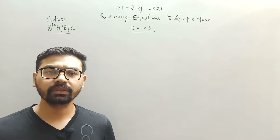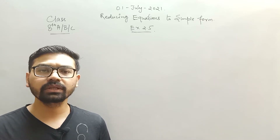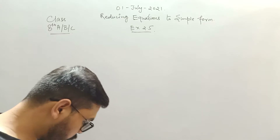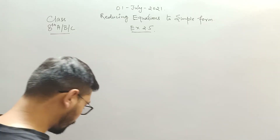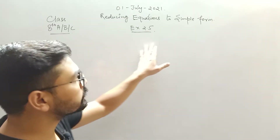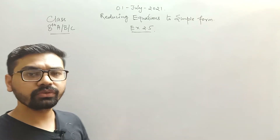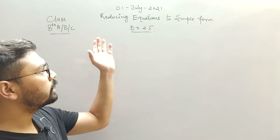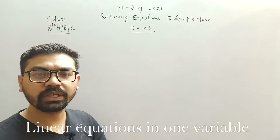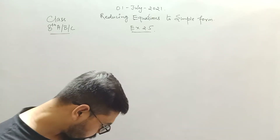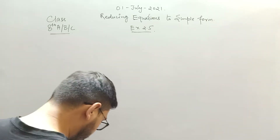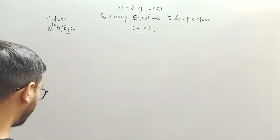Let's start with Exercise 2.5 — these two exercises were left earlier so I'm just completing them. The topic is reducing equations to simpler form. First, you need to take an equation and convert it into simplest form. I'll explain how now.